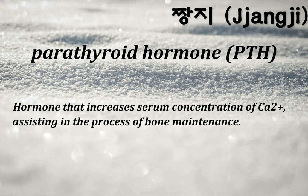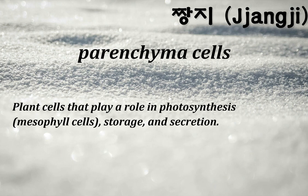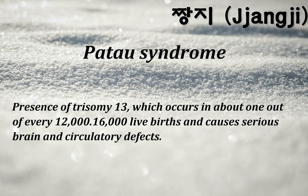Parathyroid hormone (PTH): hormone that increases serum concentration of Ca2+, assisting in the process of bone maintenance. Parenchyma cells: plant cells that play a role in photosynthesis (mesophyll cells), storage, and secretion. Patau syndrome: presence of trisomy 13, which occurs in about 1 out of every 12,000–16,000 live births and causes serious brain and circulatory defects.